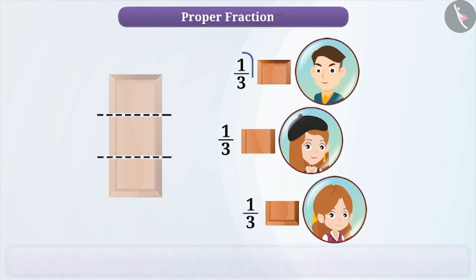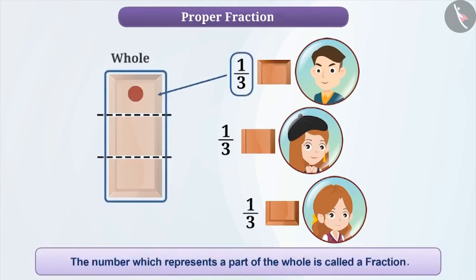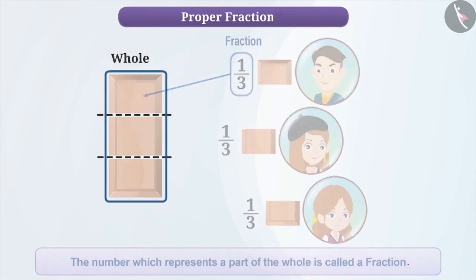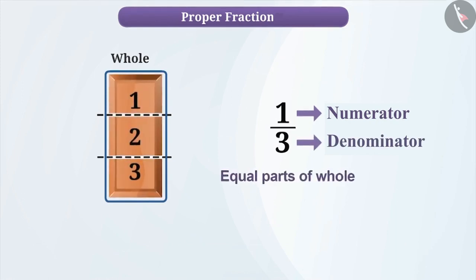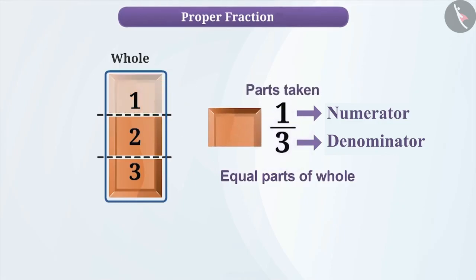The number which represents a part of the whole is called a fraction. Fraction is expressed as numerator by denominator. The number of equal parts the whole is divided into becomes the denominator, and the number of parts taken becomes the numerator.